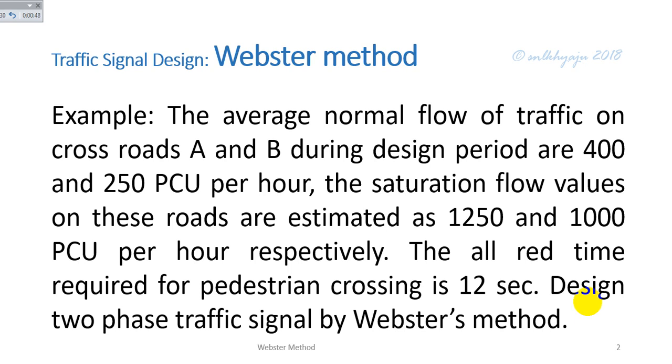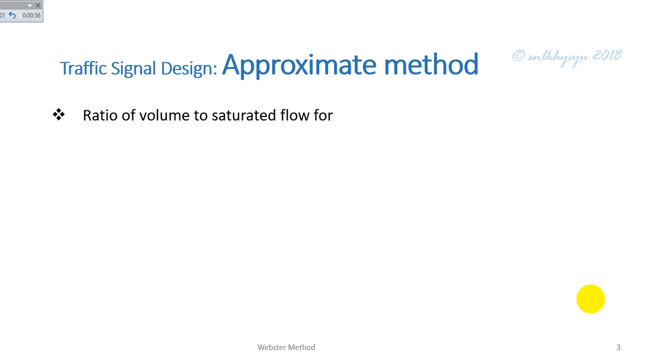The all red time required for pedestrian crossing is 12 seconds. Design two phase traffic signal by Webster method. For the solution, the first step is to calculate the ratio of volume to saturated traffic flow. For road A, y_a equals 400 divided by 1250, calculated as 0.32.